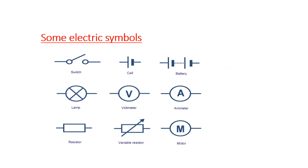Here are some electric symbols in case anyone forgets. These are the symbols of switch, cell, battery, lamp, voltmeter, ammeter, resistor, variable resistor, and motor. And there are many others, but we will be concerned in these symbols only.